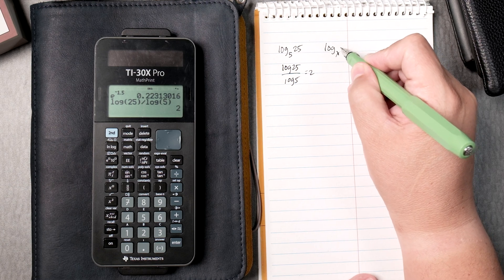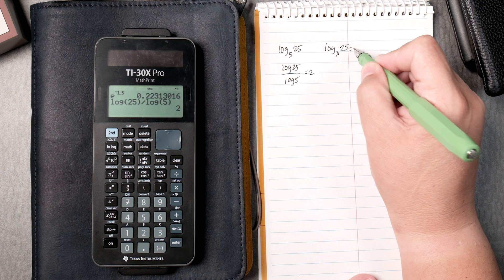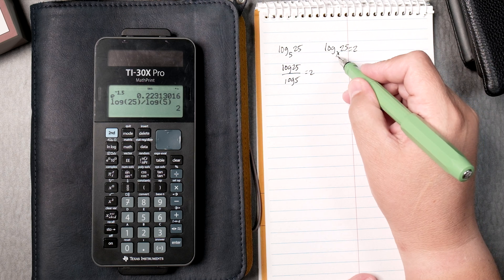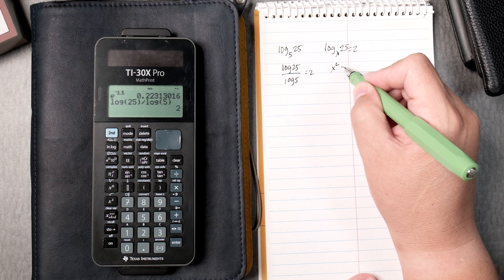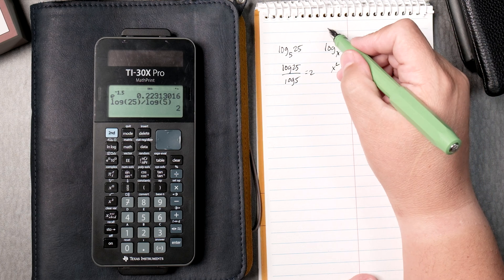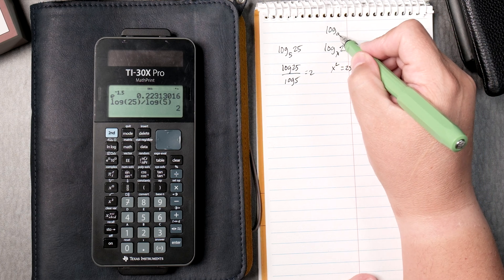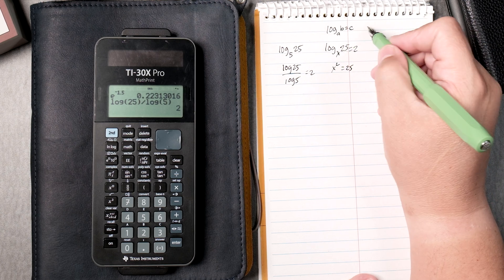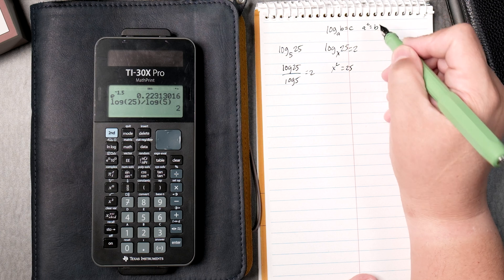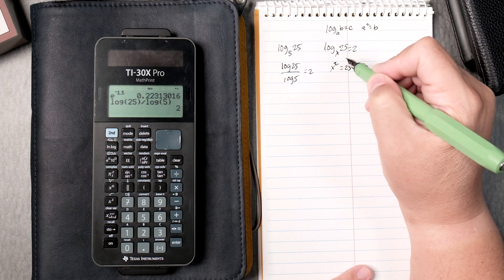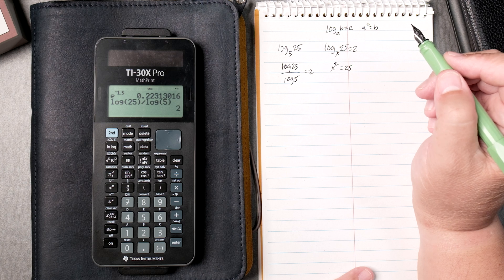Log base x of 25 equals 2. The rule is x to the 2 power equals 25. Whatever it is, the log base a of b equals c, where a to the c is equal to b, right? Might not be those same letters but close enough.